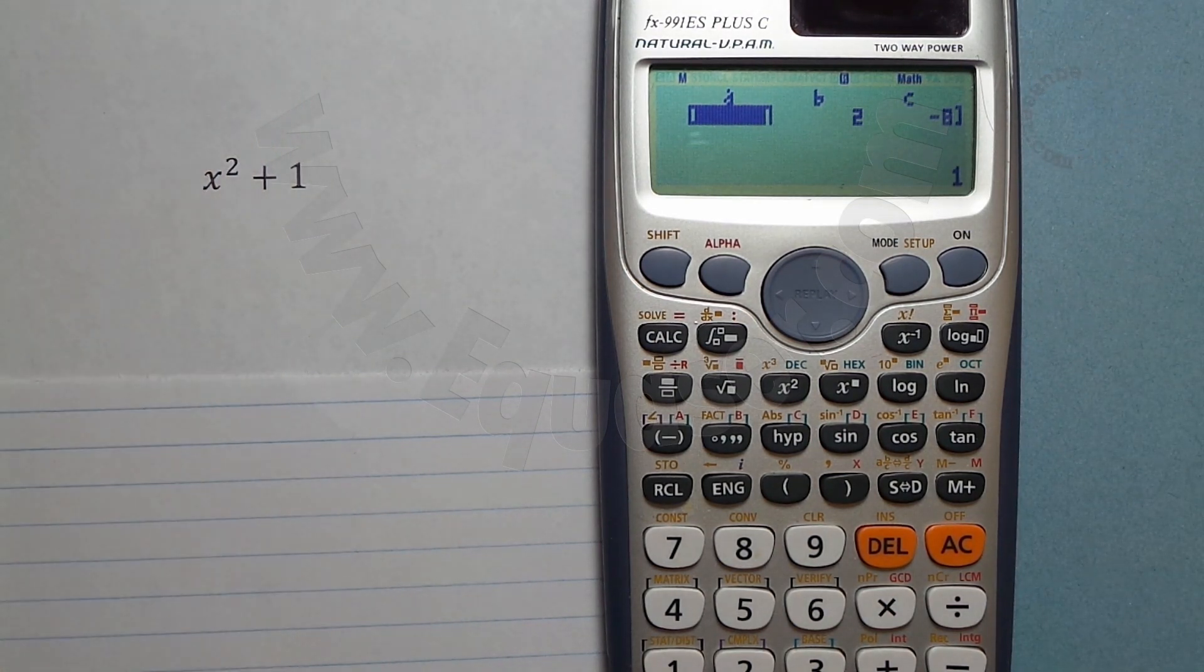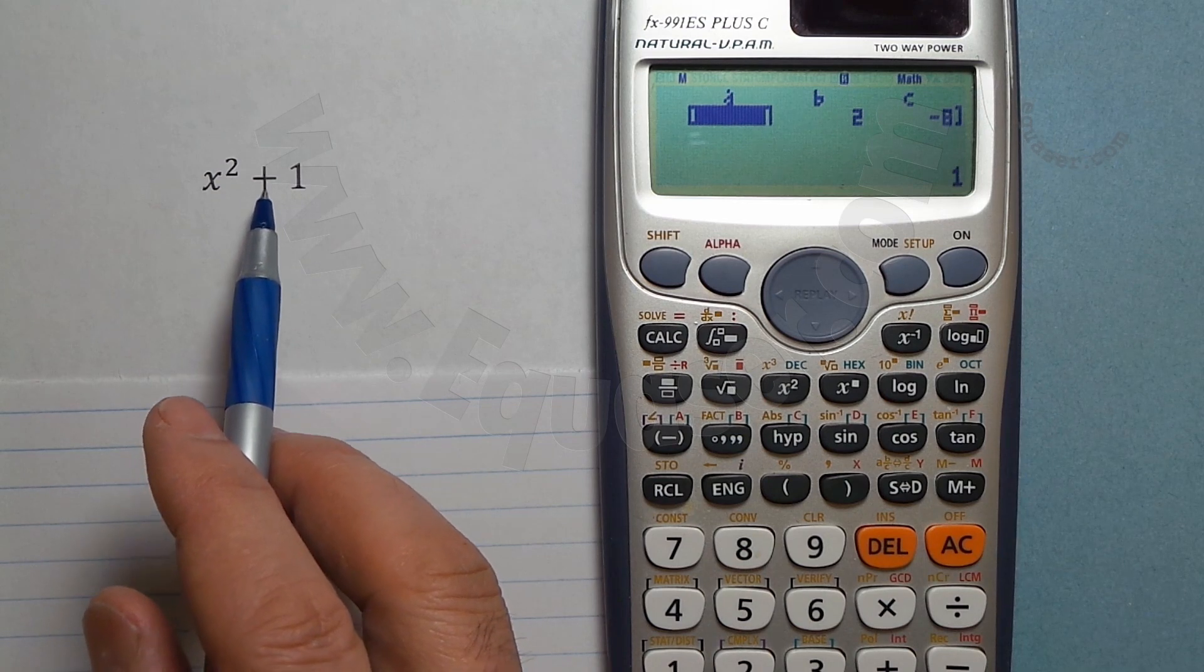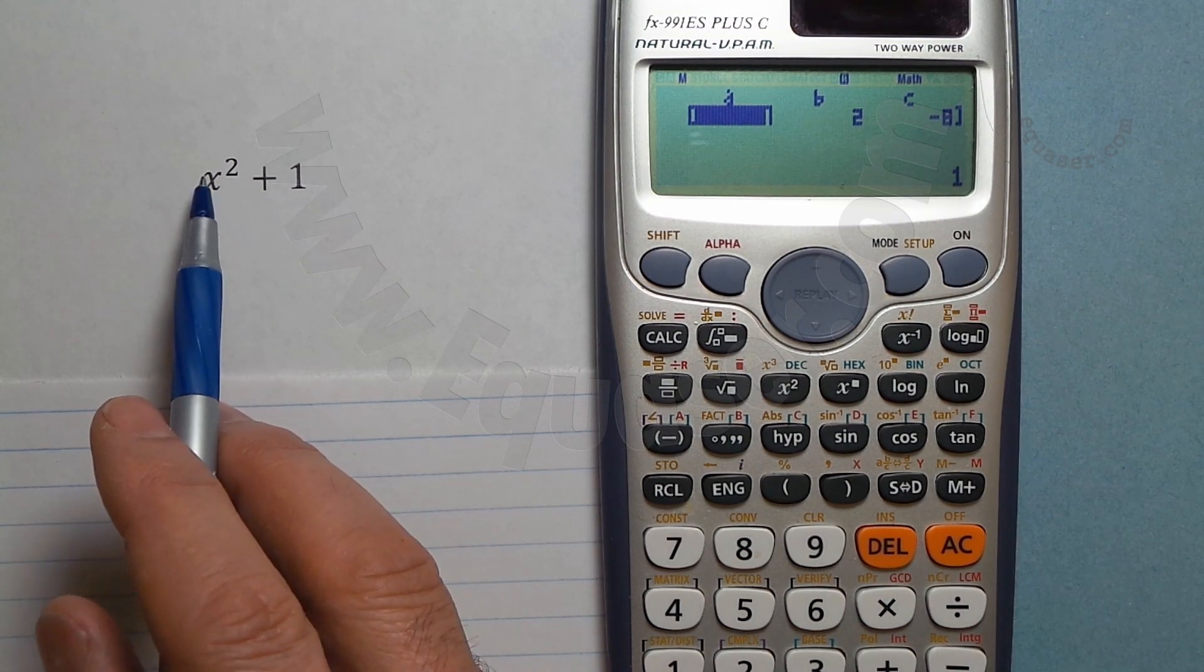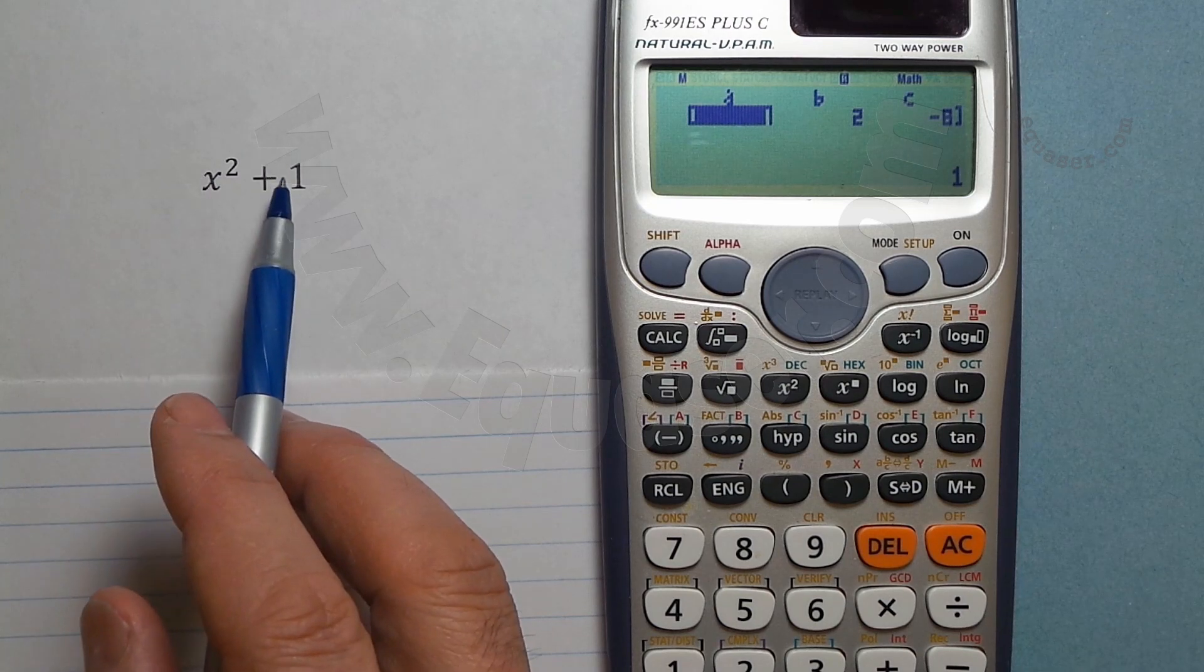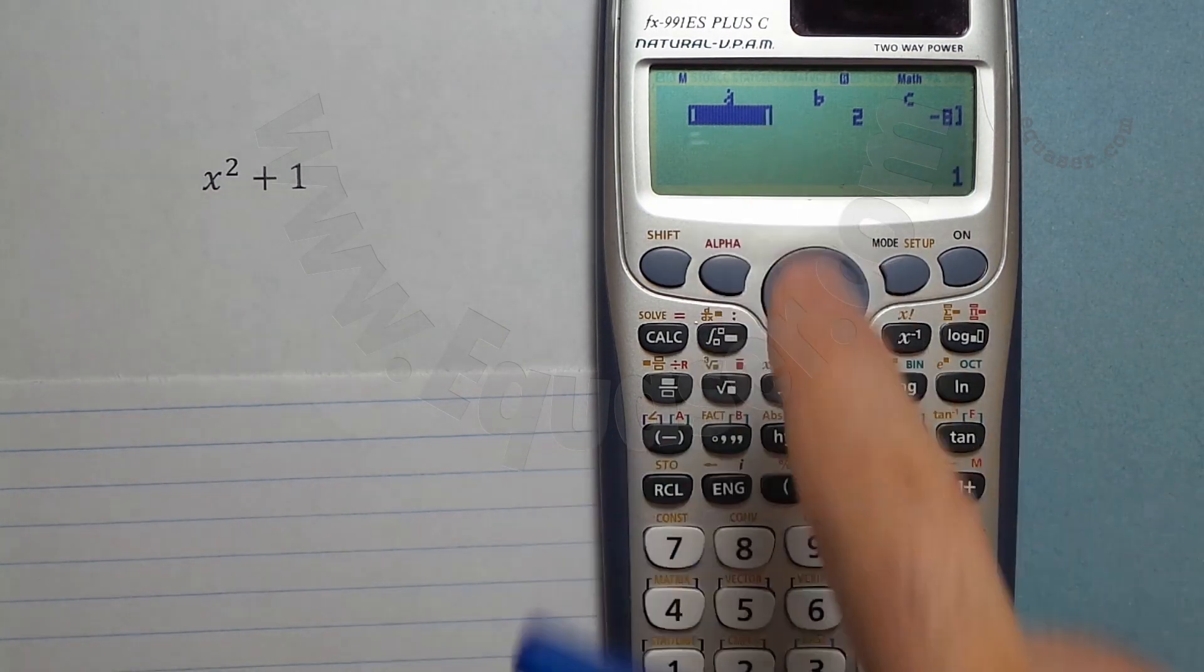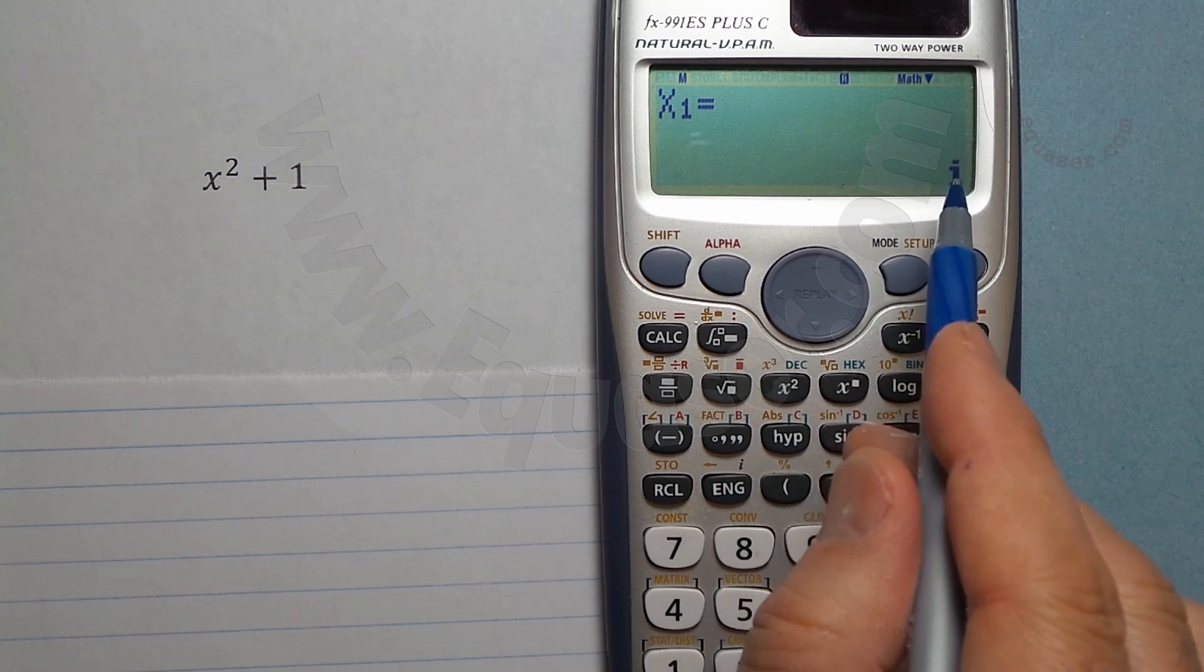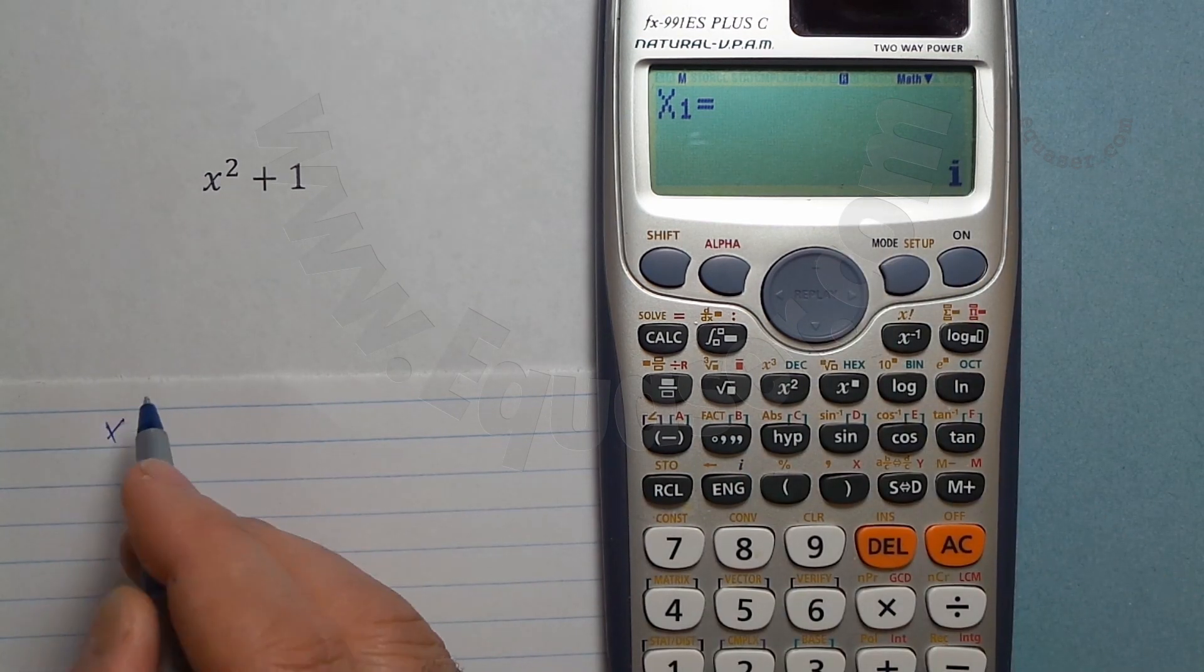Now let's do another one. For this one, in this case, as you can see, we don't have the second term x without the power. So we don't have that x, so in that case the value of a is 1, b is 0.